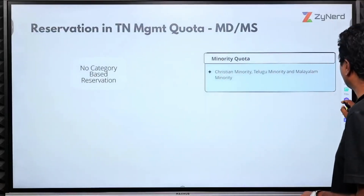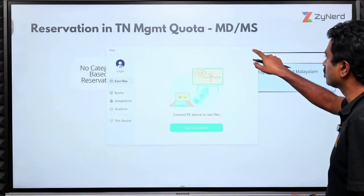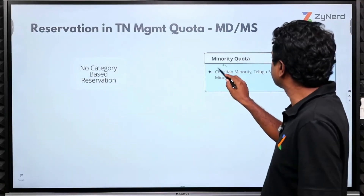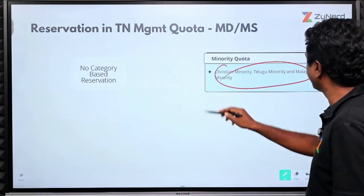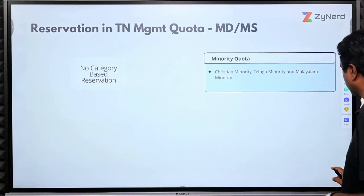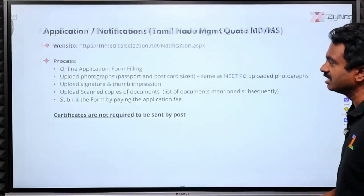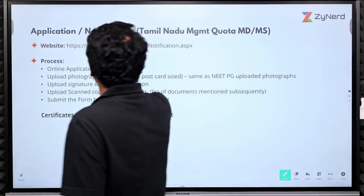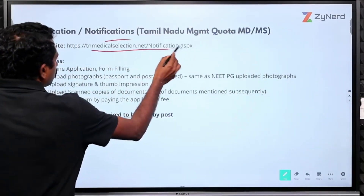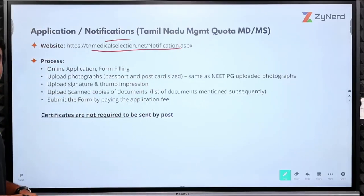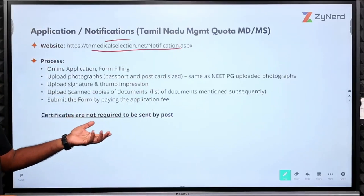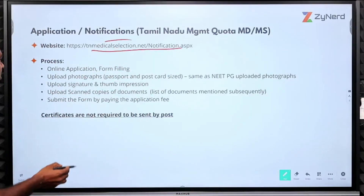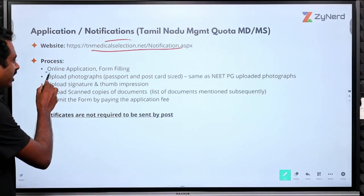There is no reservation in Tamil Nadu management quota. However, Christian minority, Telugu minority, and Malayalam minority seats exist. Applications and notifications are done through this portal. If you go through the demo, the direct link for management quota applications is also available there.